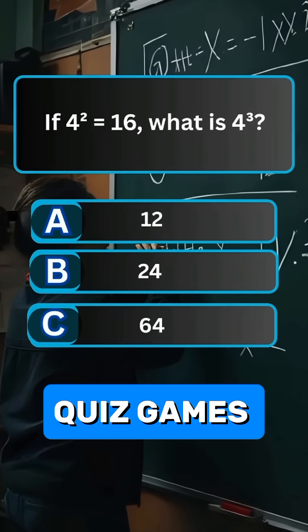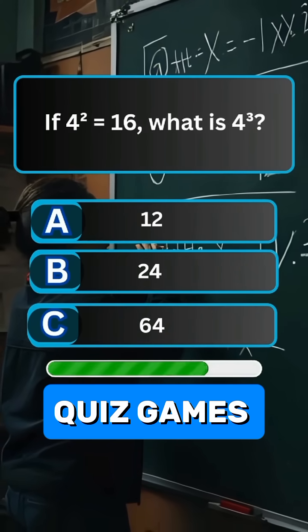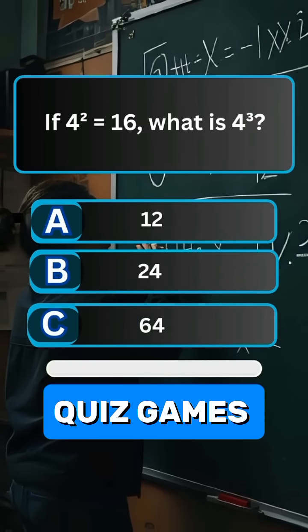Question 5. If 4 squared is equal to 16, what is 4 cubed? Answer C. 64.